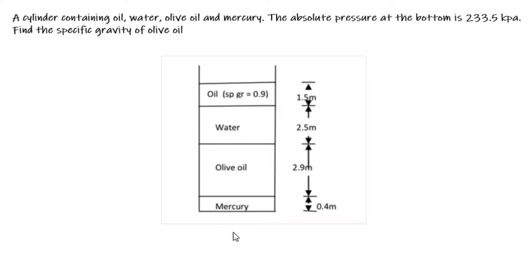Hi there and welcome back. Let us look at this example. We are given that a cylinder containing oil, water, olive oil, and mercury has an absolute pressure at the bottom of 233.5 kilopascal. We are asked to find the specific gravity of olive oil. Looking at the diagram, we are given the specific gravity of different products: oil is given at 0.9, mercury is given at 13.6, and water is given at 1.